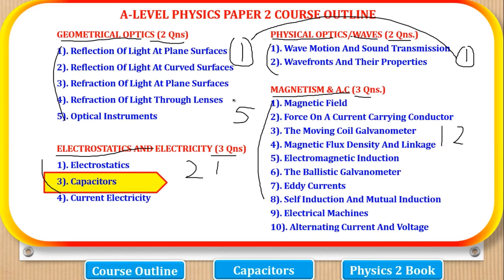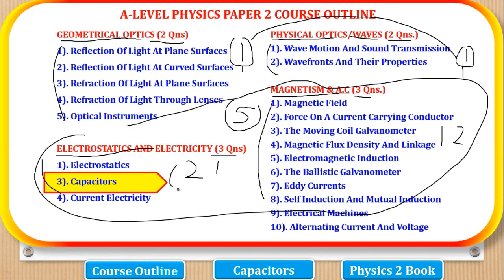A student is expected to either answer two from here and one from here, or two from here and one from here to make the five questions in the paper. So in total, you were expected to answer five questions. Where one is from this part, one is from this part, and here in these two, it is you to choose. You can say I'll do two here and one here, or one here and two here.